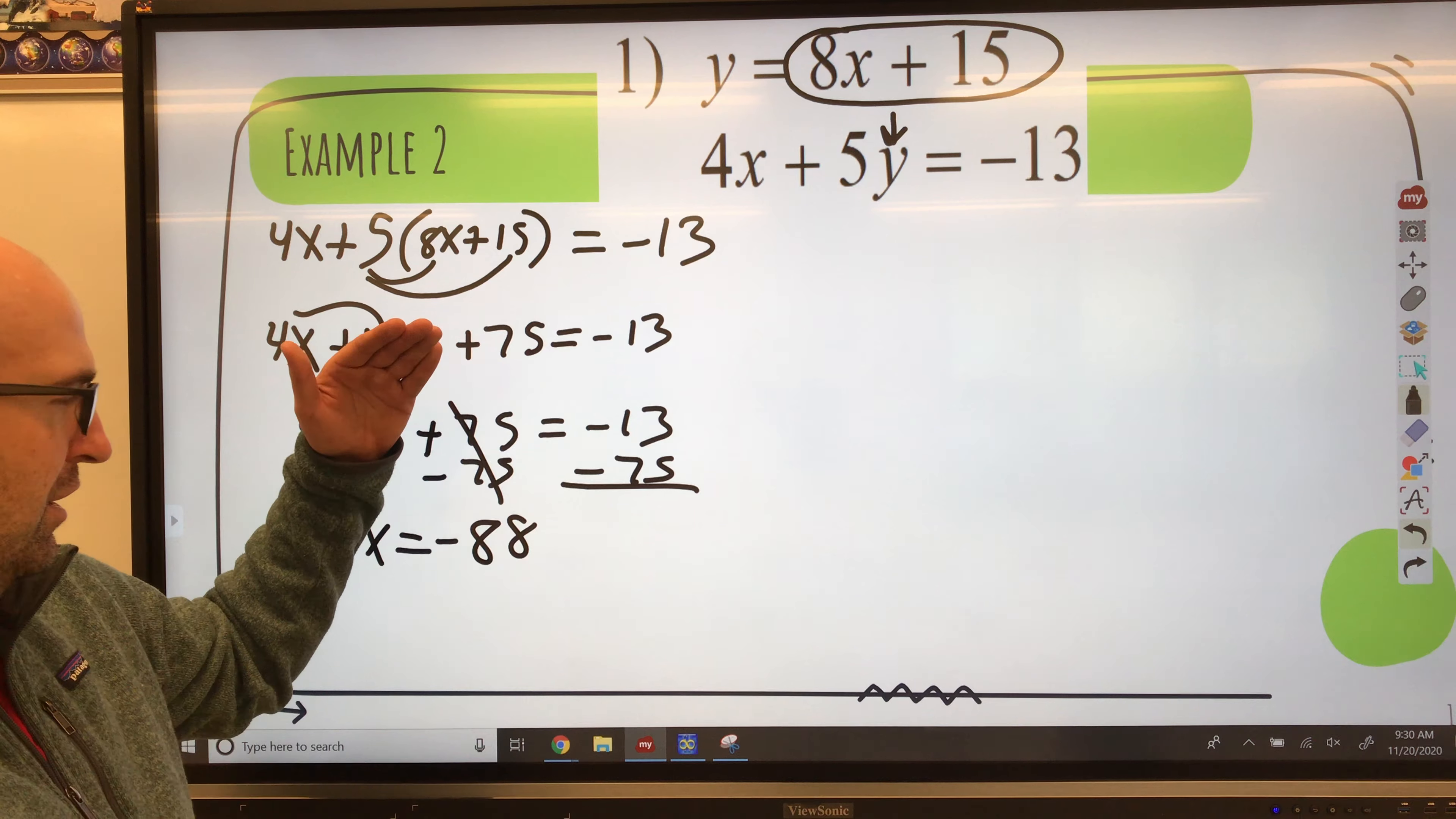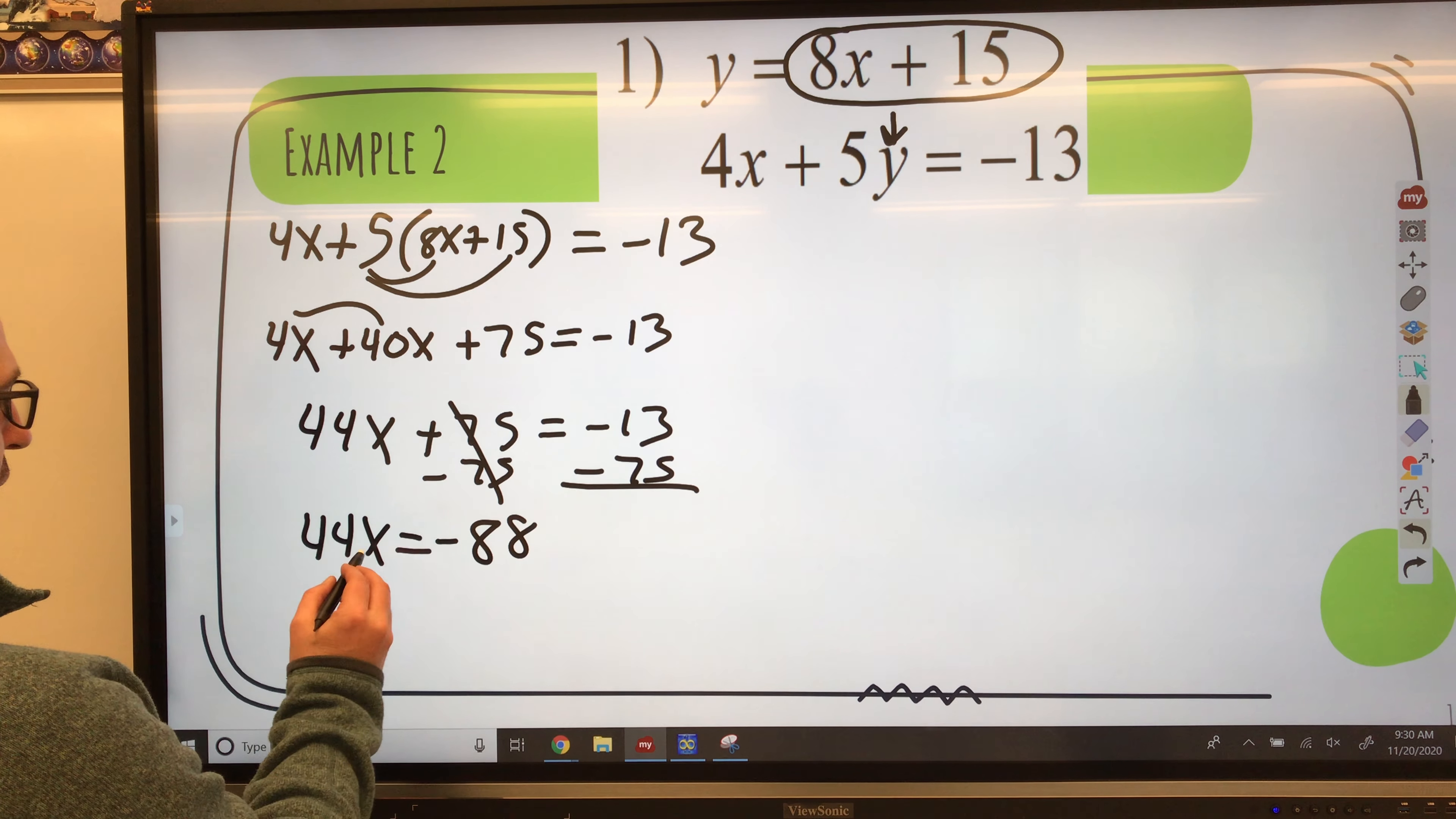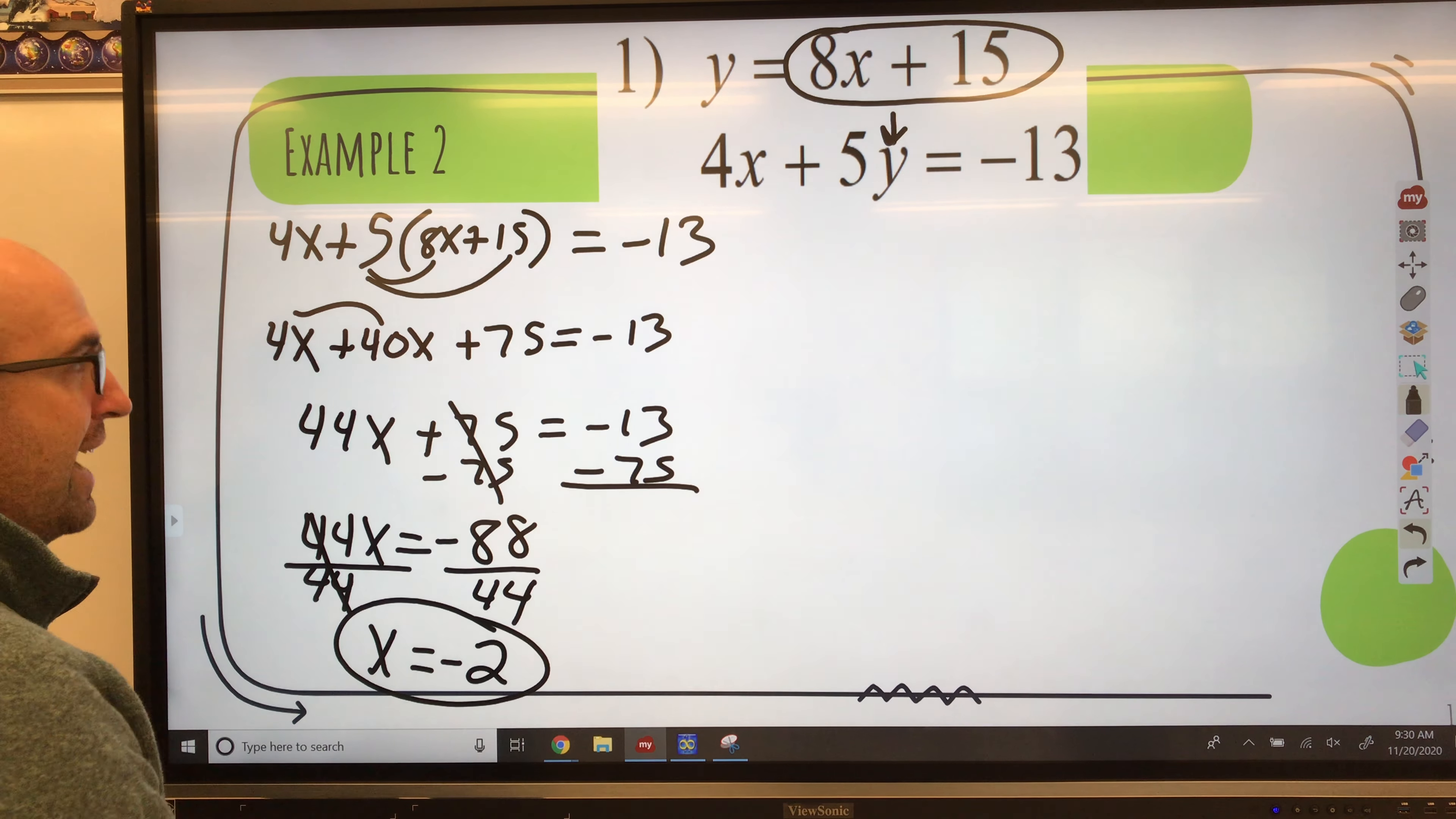If you have trouble adding integers that are minus signs and plus signs, always double check that in the calculator. Now 44x equals negative 88. Divide by that coefficient. And x equals negative 2.